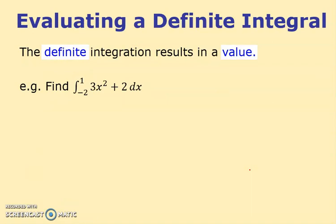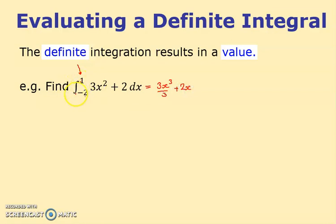The definite integration is going to result in a value. I know this is going to be a definite integral because it's got two numbers — these are called the limits of integration. Rather than spending weeks showing you how to do this theoretically, I'm just going to do the sum. First of all it's an integration, so add the power divided by the power — exactly the same as before. It goes 3x cubed over 3 plus 2x. On these ones, because it ends with a number, we don't put plus c. Instead we put big square brackets — make sure they're square — and write 1 and minus 2 at the end. These are still called the limits of integration.